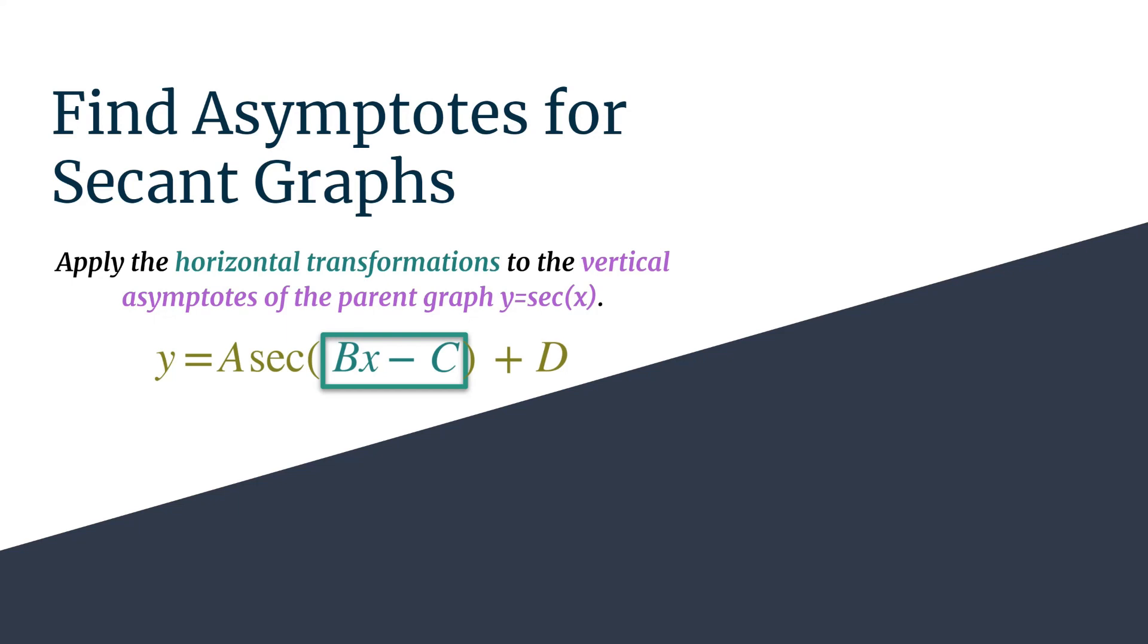And then take a look at the graph of secant, just the y equals secant x if you aren't familiar with where those asymptotes are, but they happen at π over 2 plus π k. Think that's where the zeros of the cosine function are.